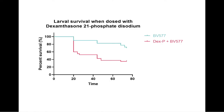As can be seen, larvae dosed with dexamethasone have a lower survival rate than those that were challenged with Acinetobacter baumannii alone, indicating that dexamethasone is immunosuppressive in Galleria mellonella.